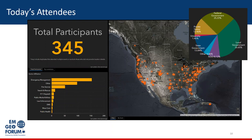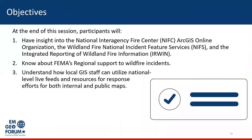This is a really exciting opportunity to bring some great content to you, especially around the topic of wildland fire. As we know, it's growing more and more complex. We often find that the communications between wildland fire and emergency management can really be improved through geospatial. At the end of the session, you'll have insight into the NIFC ERGS online organization, the wildfire national incident feature services and Integrated Report of Wildland Fire Information, otherwise known as IRWIN. We'll know more about FEMA's regional support with an example from Region 9, and you should come away with an understanding of how you can utilize these national feeds and resources for response efforts — both for your internal maps and your public maps.